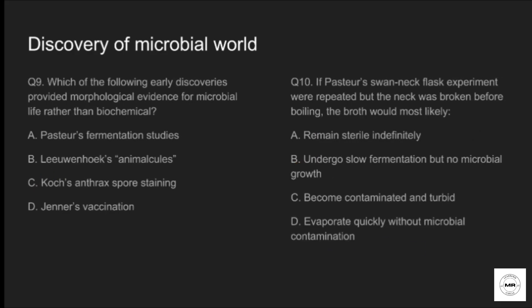Question number nine: which of the following early discoveries provided morphological evidence for microbial life rather than biochemical? Option A: Pasteur's fermentation studies. Option B: Leeuwenhoek's animalcules. Option C: Koch's anthrax spore staining. Option D: Jenner's vaccine. The correct answer is option B, Leeuwenhoek's animalcules. Leeuwenhoek provided visual, morphological evidence of microorganisms by using his microscope.